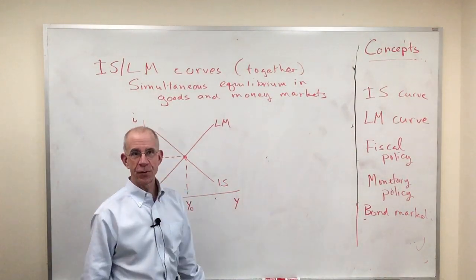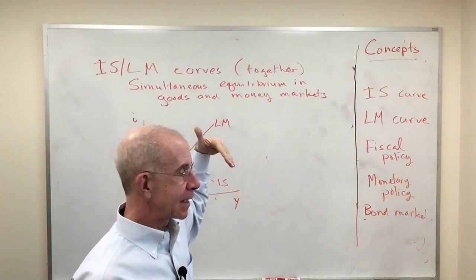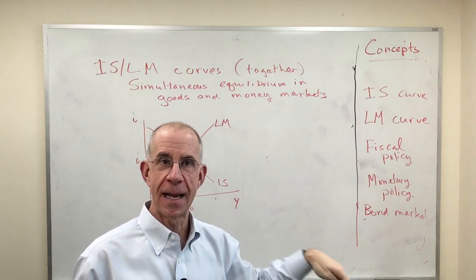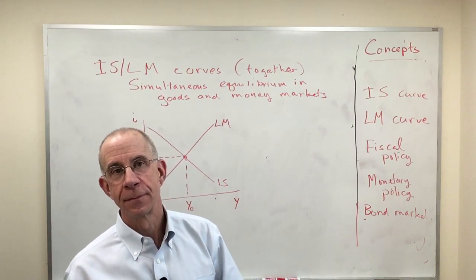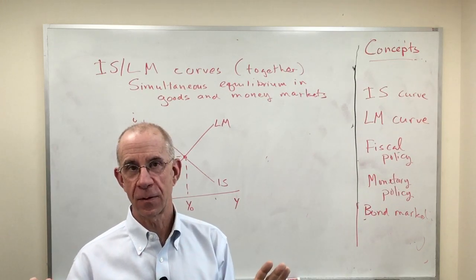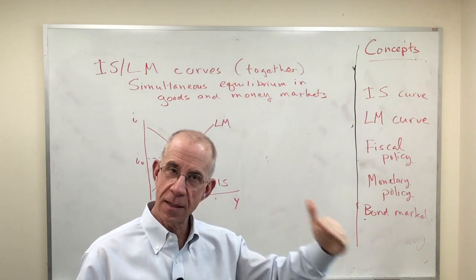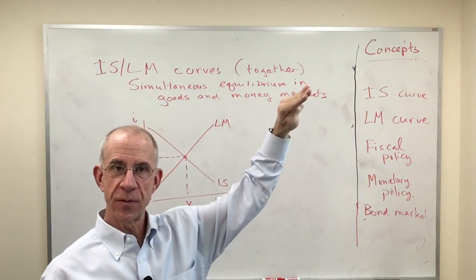LM is like the limb of a tree, kind of pointed upwards. IS is like an ice slope. It's going down. If you keep that in mind, you'll at least start out with the right shapes of these things. IS curves down like an ice slope, like skiing. LM is like the limb of a tree.